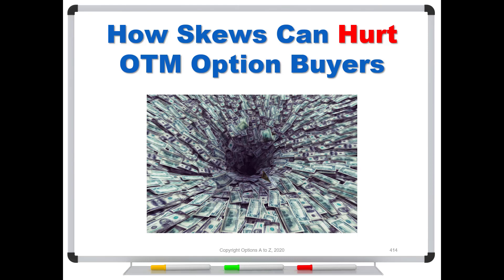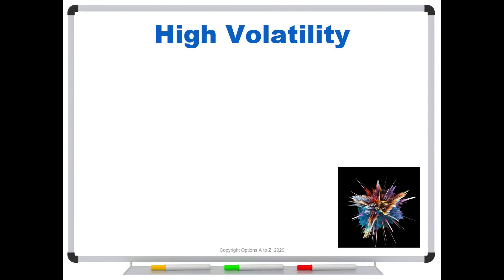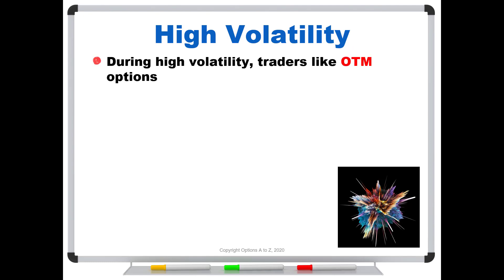Good morning options traders. I thought this would be a perfect time to talk about how skews can hurt out-of-the-money option buyers. We're still in a fairly high volatility environment with coronavirus, but even if we're not, something always comes along that puts us into volatile markets. During times of high volatility, traders like out-of-the-money options, mostly to reduce the cost.